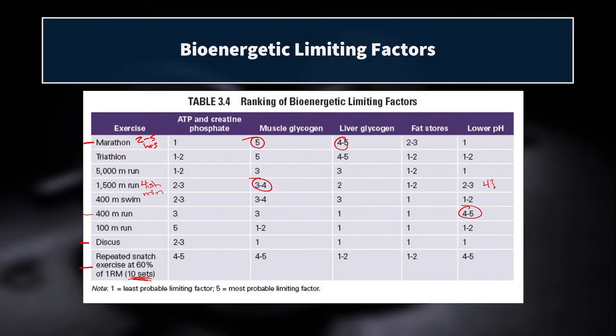For repeated bouts of the snatch at 60% of 1RM — not too heavy, moving the bar fast, perhaps power snatches — it really comes down to ATP and creatine phosphate stores. Remember, it takes up to eight minutes to replenish creatine phosphate. So unless you're resting a full eight minutes, across 10 sets of singles each set will start with less and less creatine phosphate, such that by the 7th, 8th, 9th, 10th set, you're relying increasingly on other energy pathways.